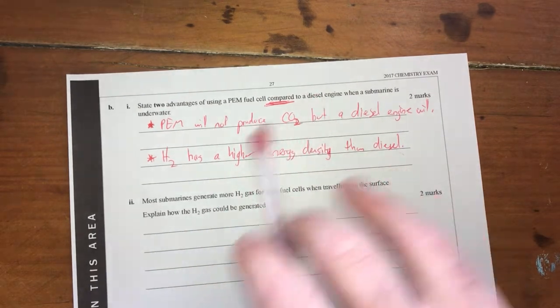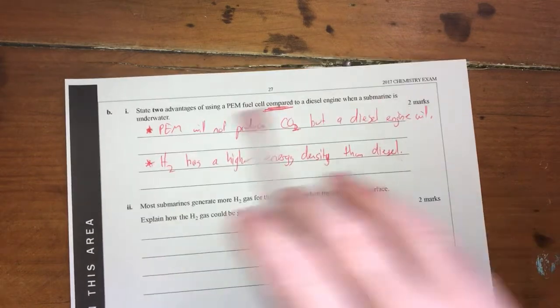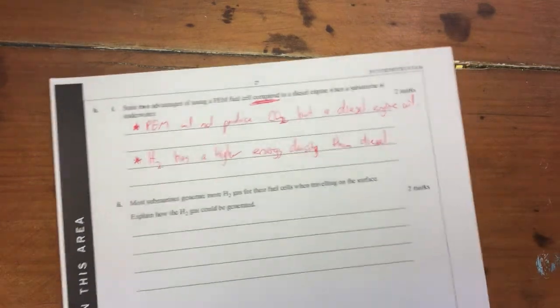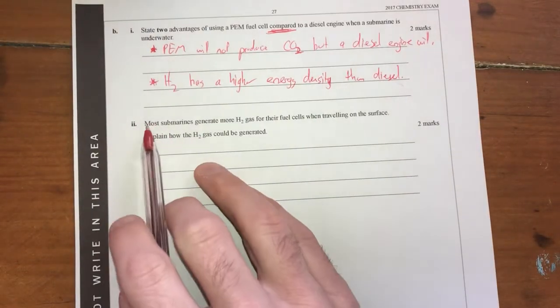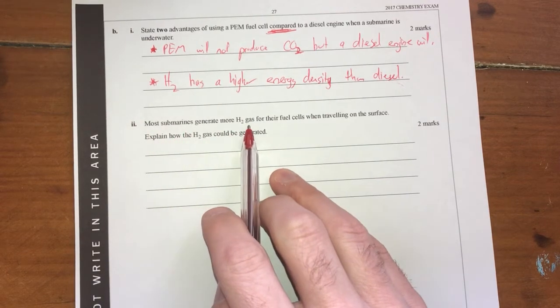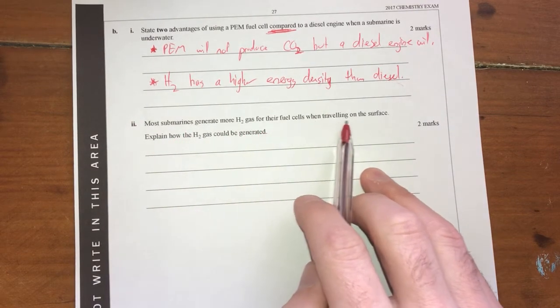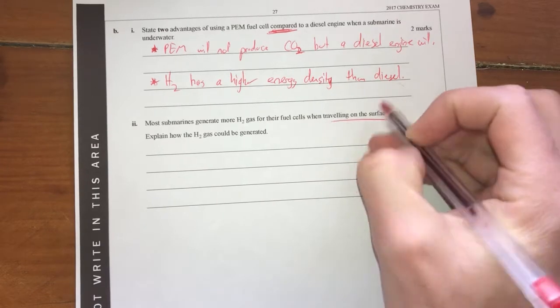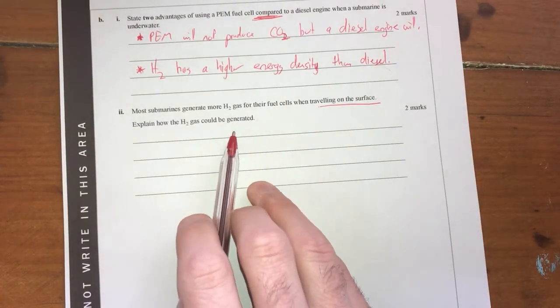But definitely, lots of responses. Two marks, two dot points, clear as day there. Next question. Most submarines generate hydrogen gas from their fuel cells when travelling on the surface. On the surface. Explain how this H2 gas could be generated.